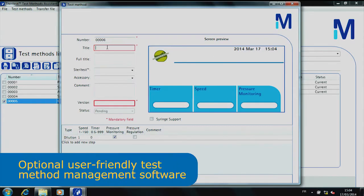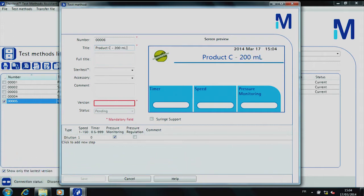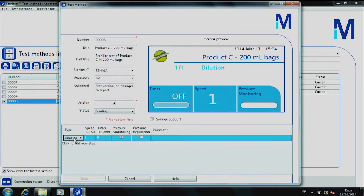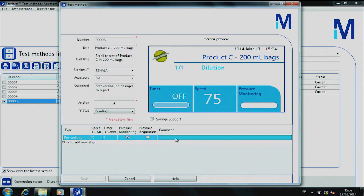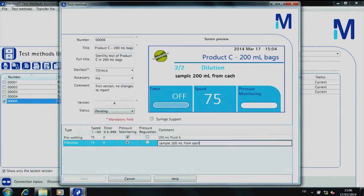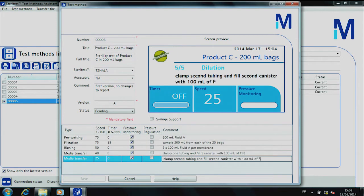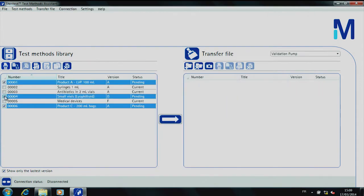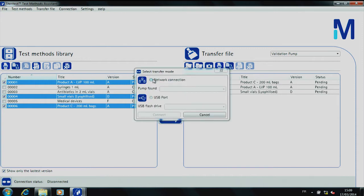The user-friendly SteriTest Symbio PC software offers the opportunity to ensure test reproducibility. You can easily create a test methods library and transfer the selected test method to your pump.